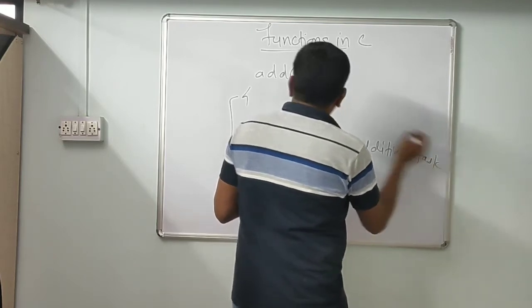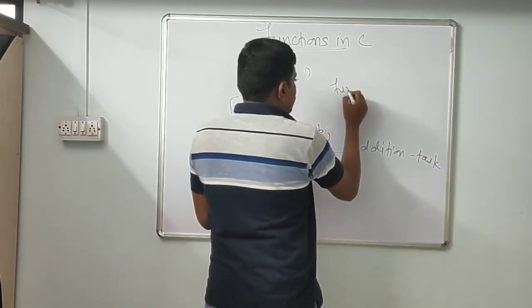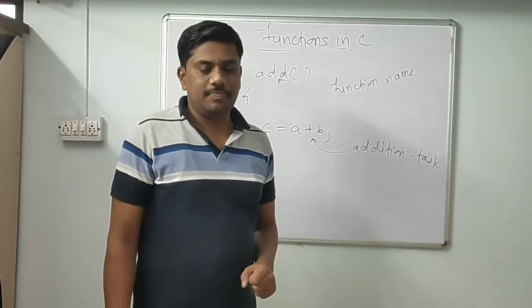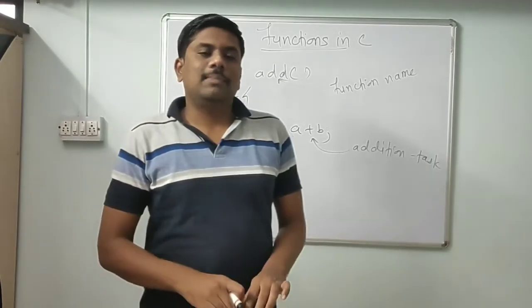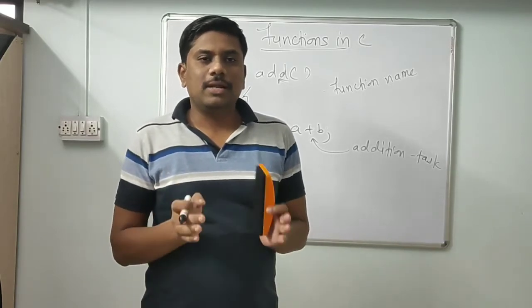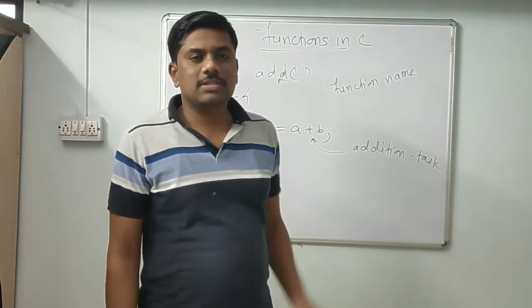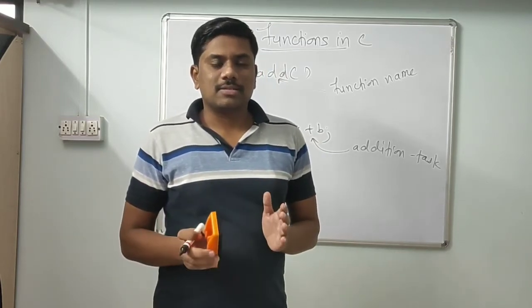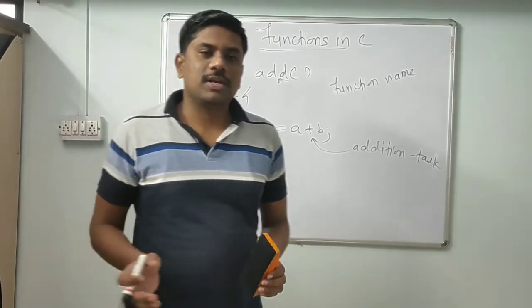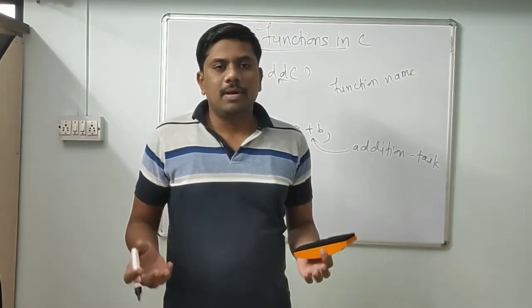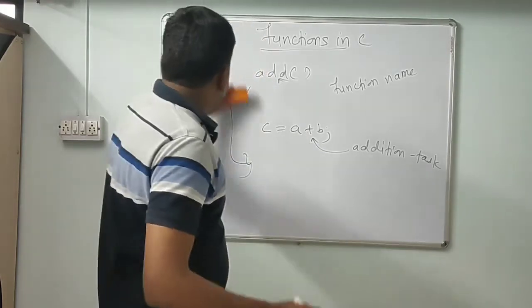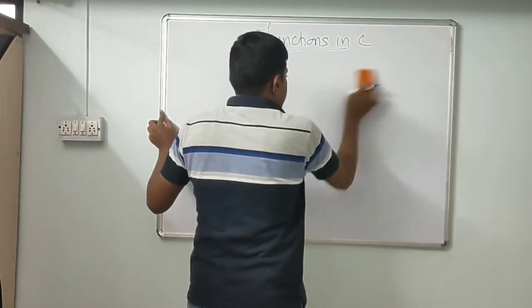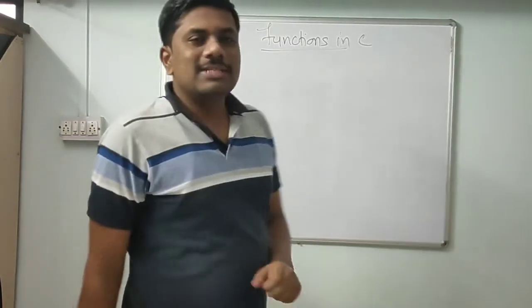Here 'add' is the function name and addition is the task. So the simple definition is: a function is a block of code that contains some logic, and that logic is used to perform a particular task. That task can be anything — area of a circle, factorial of a number, finding whether a given number is prime or not, etc.